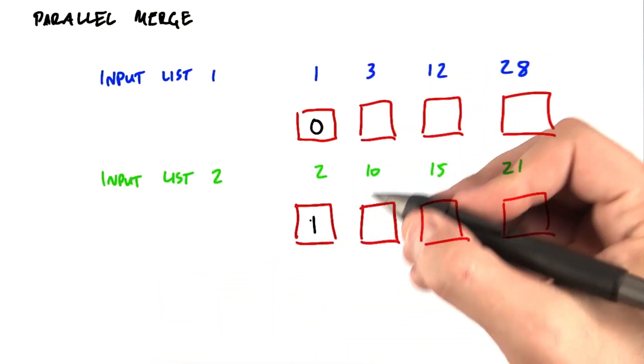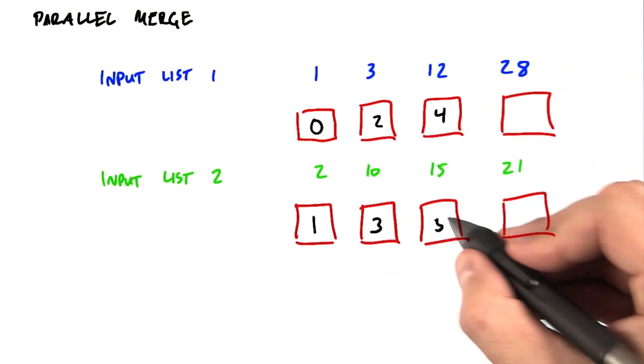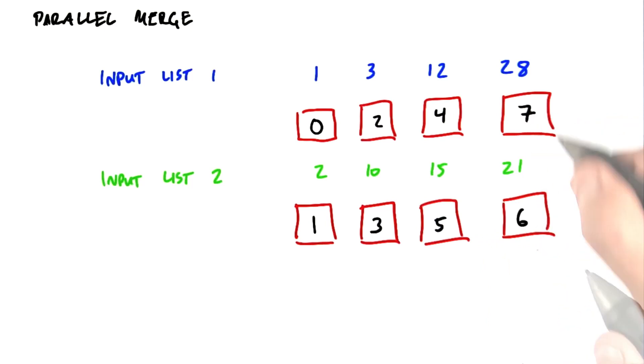The next smallest element is here, and then here, and then here, and then here, here, here, and here. So the key here is, how do we get these numbers? That's the important part of the merge algorithm here.